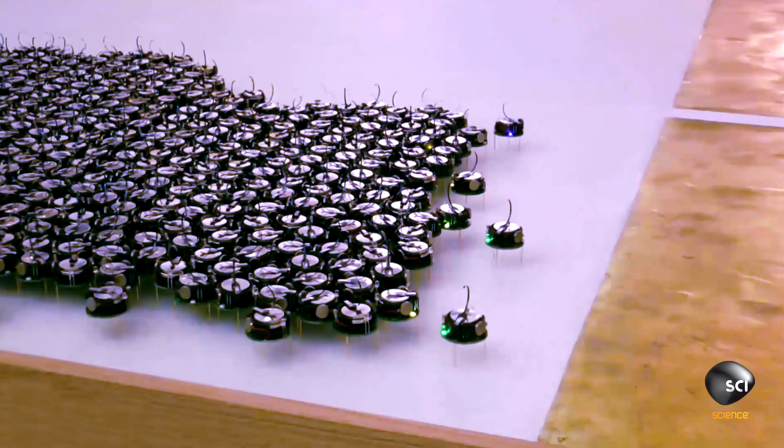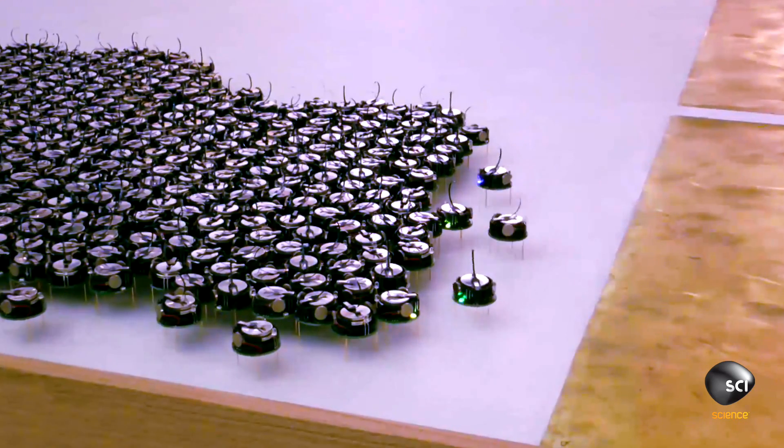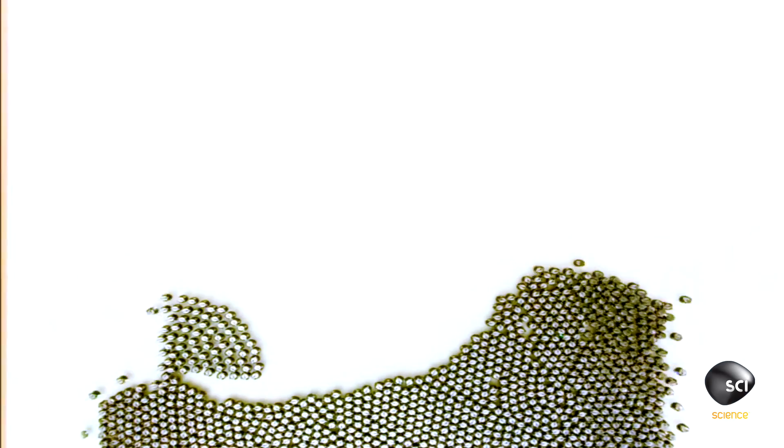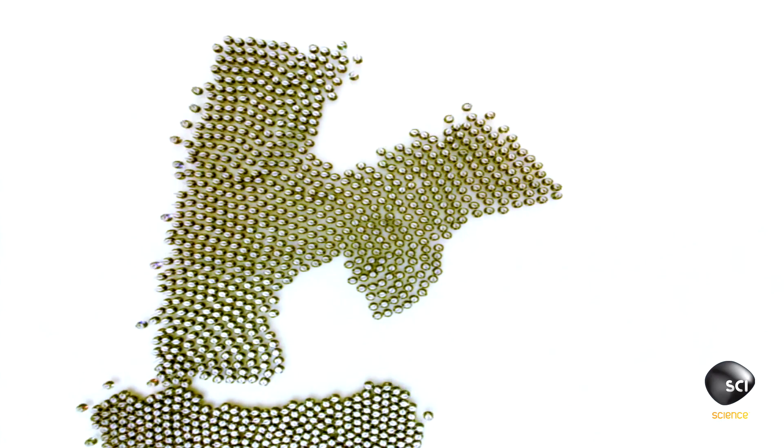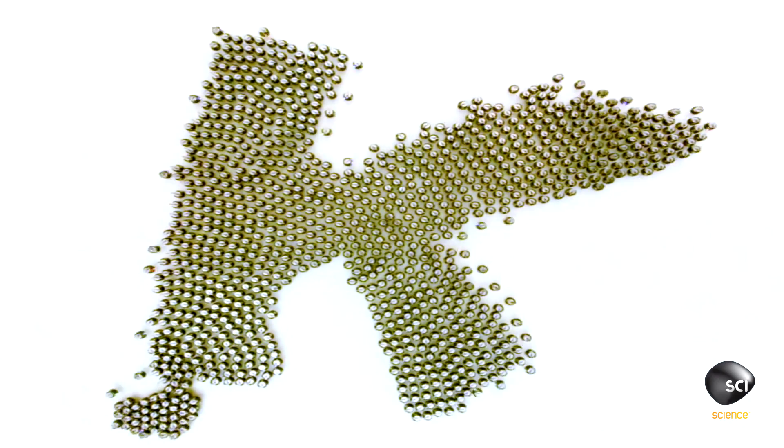The kilobots then use tiny transmitters to bounce light signals off the floor to each other, relaying information about distance and progress, which allows the swarm to self-organize with shocking efficiency.